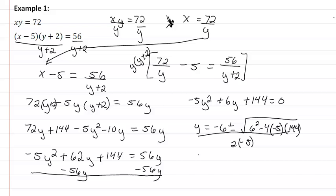So we're going to get y equals negative 6 plus or minus 54 once we take the square root all over negative 10.